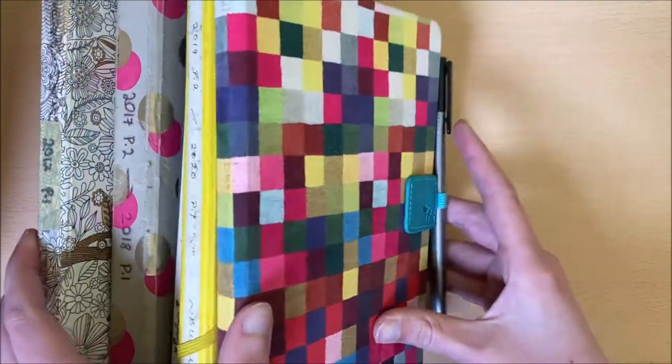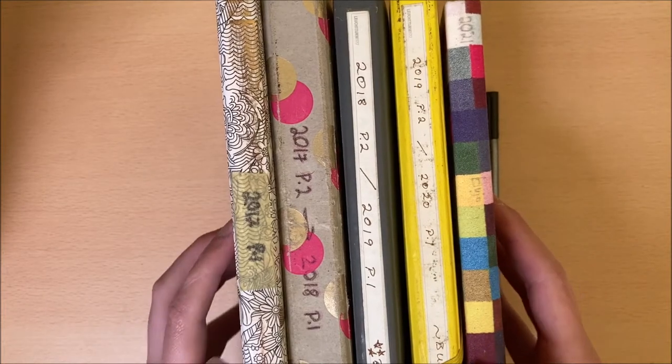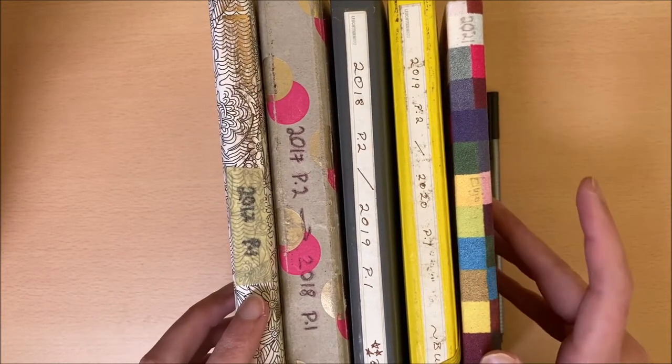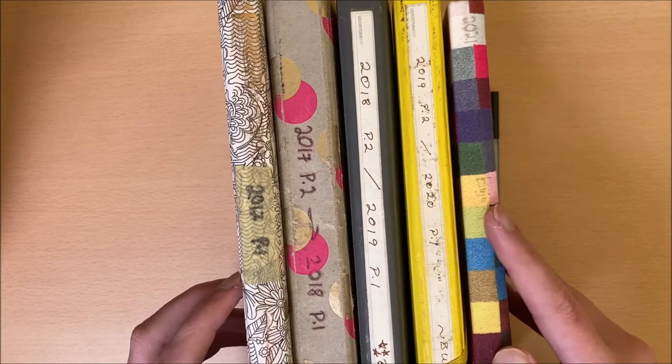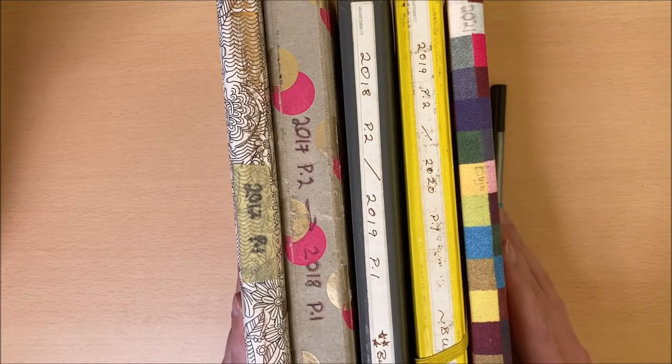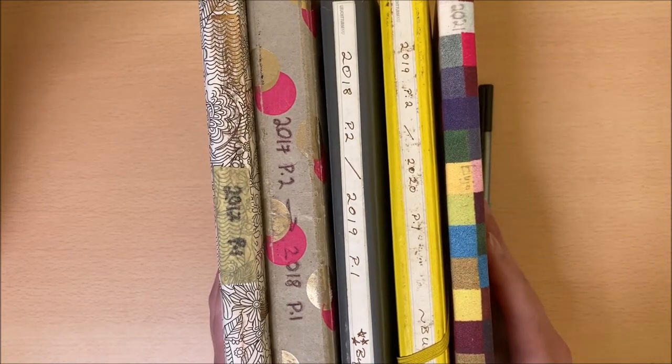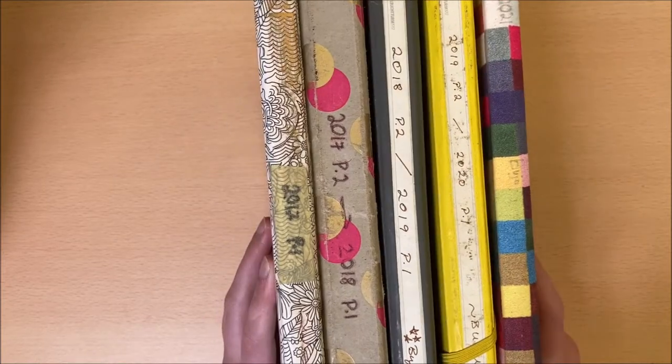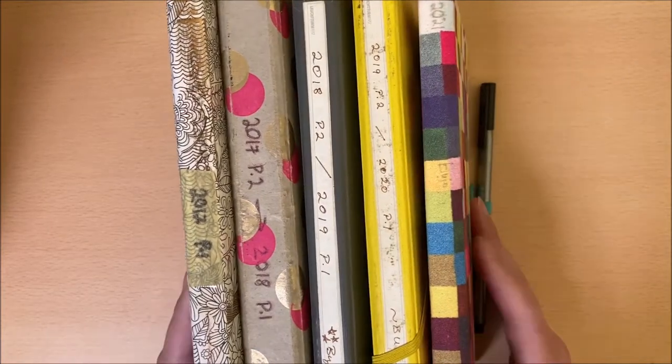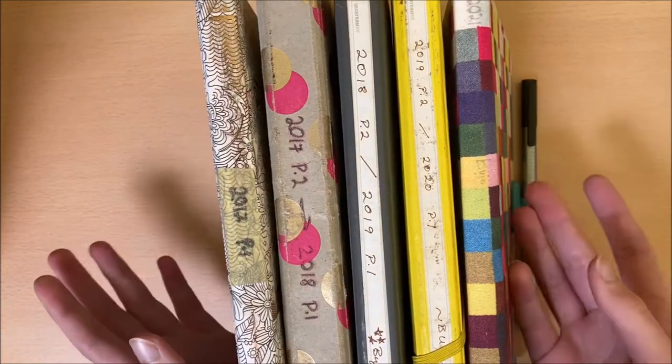So I have here five of my own bullet journals. These are from the last five years, from 2017 up to my current journal in 2021. I will be using these to show you guys the tips and tricks that I plan on sharing with you, but also showing how certain methods work and others don't. At least for me personally, you will see how my bullet journal style has developed throughout the years.